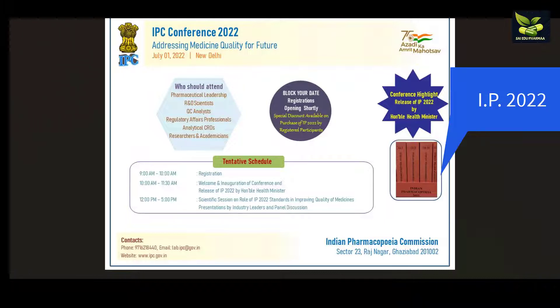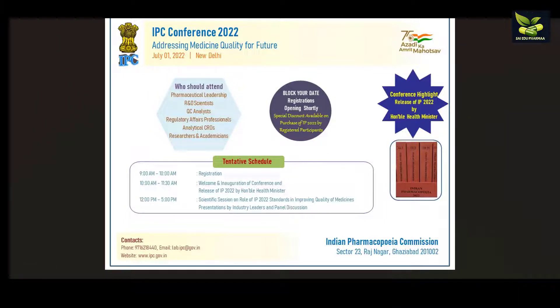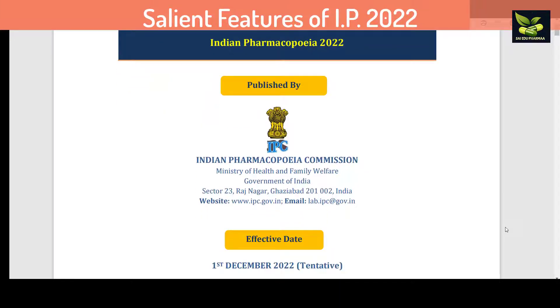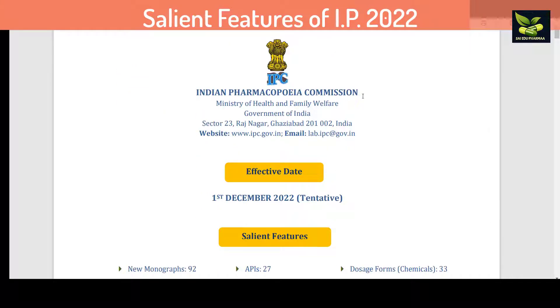After this, I will be telling you some of the important salient features of IP 2022. This is Indian Pharmacopoeia 2022, which we all know is published by the Indian Pharmacopoeia Commission, Ministry of Health and Family Welfare, Government of India.